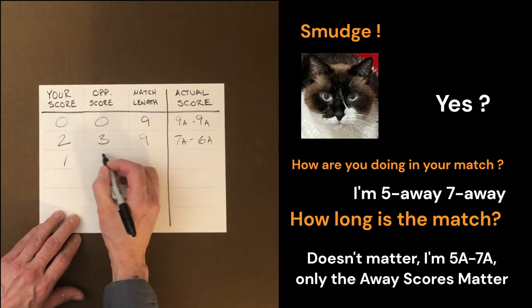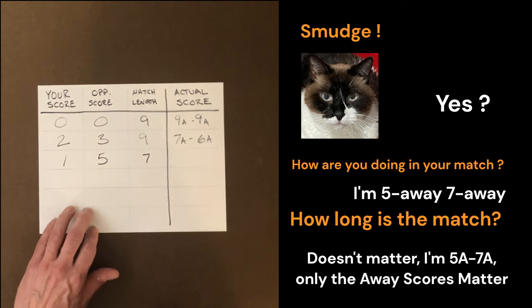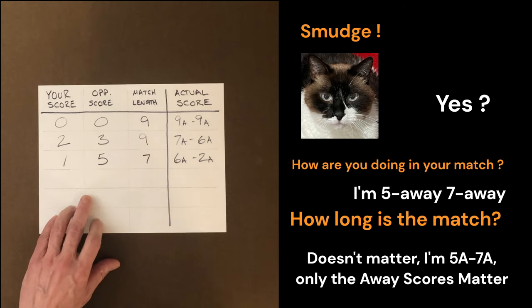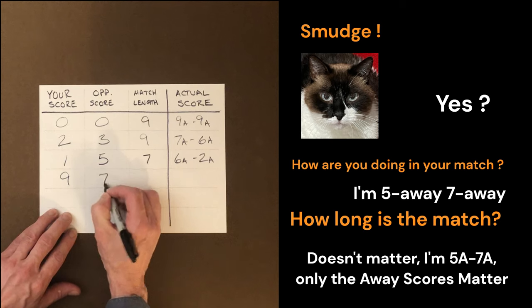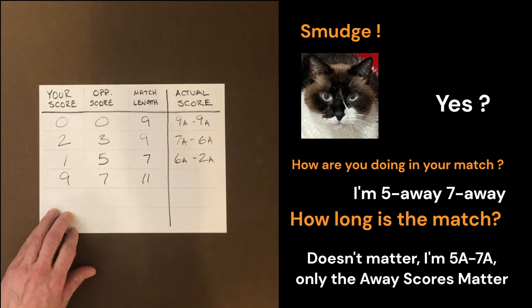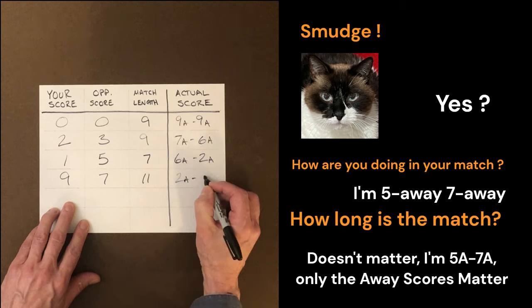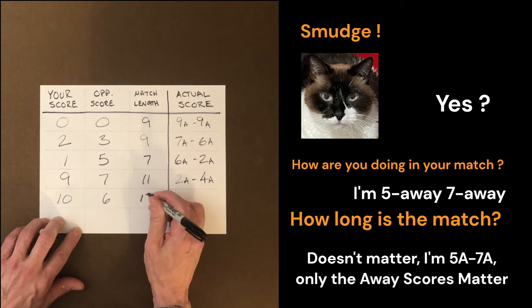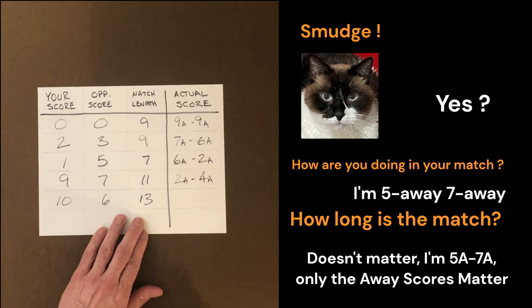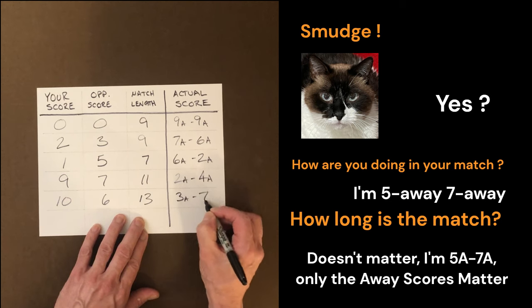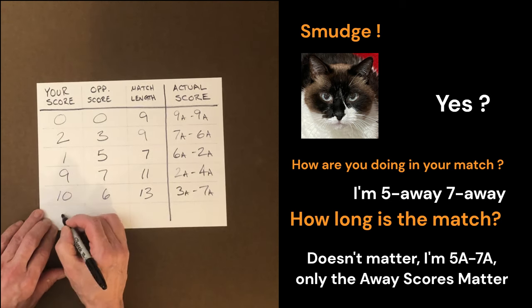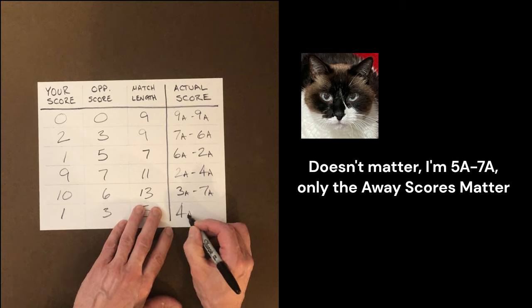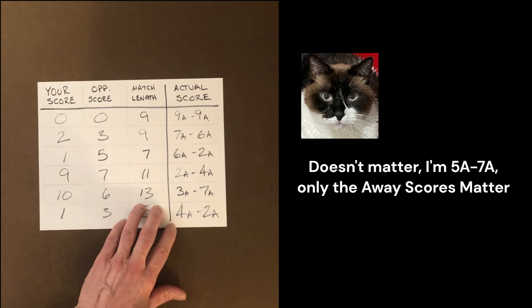If you were 1 to 5 in a 7-point match, you would be 6 away against 2 away. If you were 9 to 7 in a match to 11 points, you would be 2 away 4 away. If you were 10 to 6 in a 13-point match, you would be 3 away 7 away. And if you were 1 versus your opponent's 3 in a 5-point match, you'd be at 4 away 2 away. That's it.